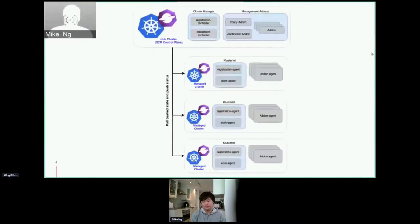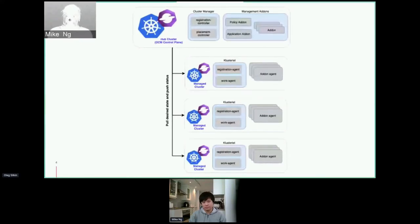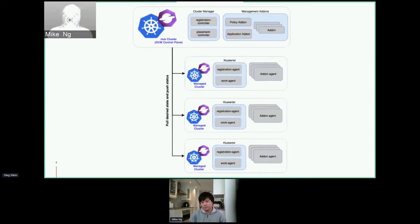We've been describing the problem with multi-cluster management, the requirements, and the concepts and APIs that help simplify fleet management. But what is the actual architecture of Open Cluster Management? As you can see from the diagram, Open Cluster Management uses a hub-to-agent framework. The hub cluster acts as a multi-cluster control plane. It holds the cluster manager operator, which communicates with the registration agent on the remote clusters for registration and lifecycle of managed clusters and cluster add-ons. The placement controller on the hub cluster is responsible for workload scheduling across multiple managed clusters.